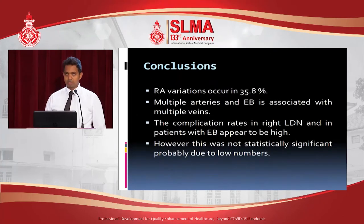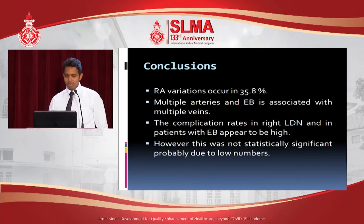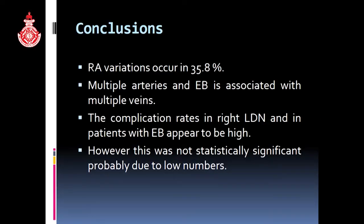In conclusion, renal artery variations occur in 35.8%. Multiple arteries and early branching are associated with multiple veins. The complication rates in right live donor nephrectomy and patients with early branching appear to be high. However, this was not statistically significant, probably due to low numbers.